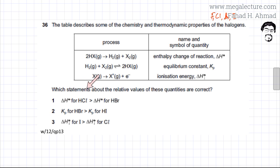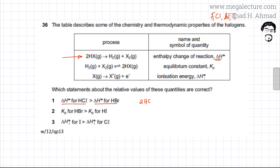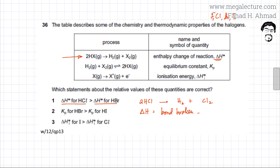We're going to investigate the first statement, which says the enthalpy for HCl is greater than the enthalpy change for HBr. So we're dealing with this first quantity — the enthalpy delta H of this particular reaction. We can look at the data booklet to figure this out. The enthalpy change for the reaction equals bonds broken minus bonds formed.